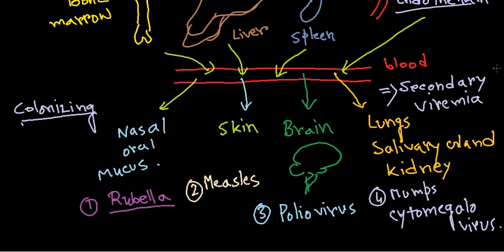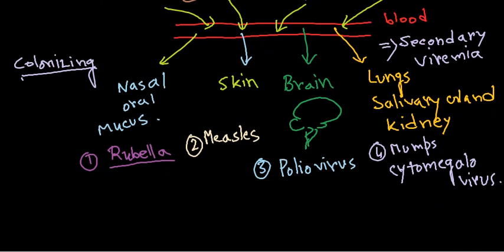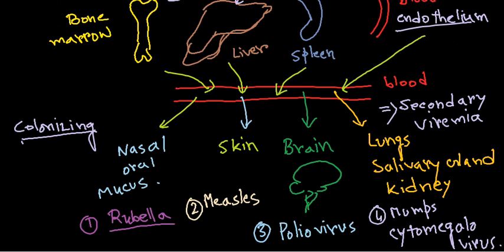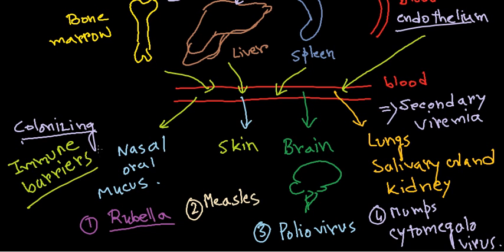During this movement of the virus from one place to another, it encounters immune barriers. If viruses succeed in overcoming the immune barriers, only then can they cause disease — otherwise they cannot. So that's the movement of viruses in the human body. I hope that's helpful. Thank you.